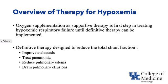Therapies for hypoxemia include oxygen supplementation, which is a supportive first-line therapy used until a more definitive therapy can be implemented. Definitive therapies are designed to reduce total shunt fraction, including resolution or improvement in atelectasis, treatment of pneumonia, reductions in pulmonary edema, and drainage of pulmonary effusions.